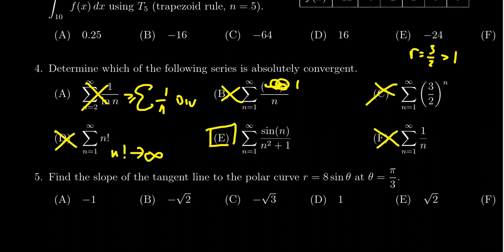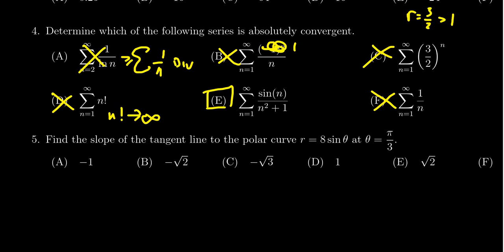But how could we convince ourselves this is in fact absolutely convergent, not just by process of elimination? Well, if you take the absolute value of sine of n over n squared plus one, the denominator is already positive, so the absolute value is really just playing a role in the numerator.